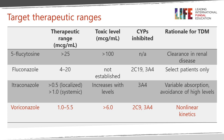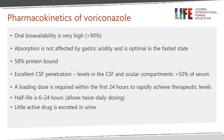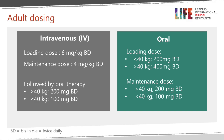The enzyme systems voriconazole goes through are CYP2C9 and CYP3A4, but there's also a polymorphism with CYP2C19. It has non-linear kinetics in adults and linear kinetics in children. Oral bioavailability is high at more than 90% and is not affected by gastric acidity, but medication is recommended to be taken an hour before food for maximum absorption. It is 58% protein bound, gets into the CSF and ocular compartments, and is typically the drug of choice for CNS disease. A loading dose is recommended to achieve high blood levels quickly. Half-life varies from 6 to 24 hours, so twice-daily dosing is the norm.